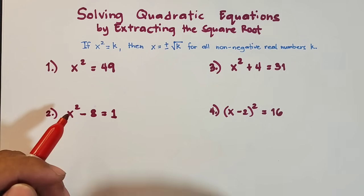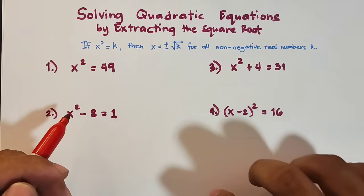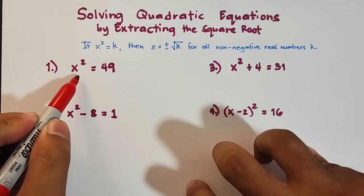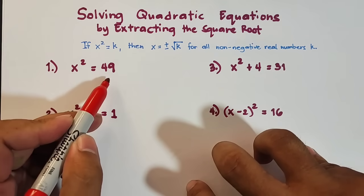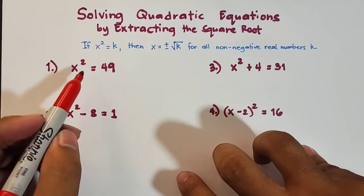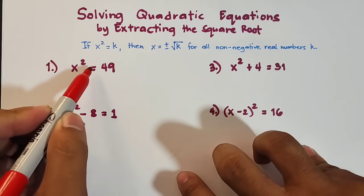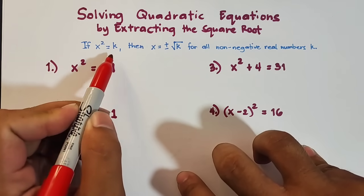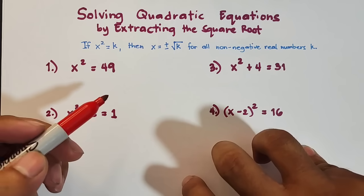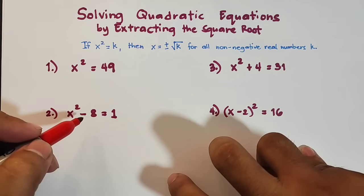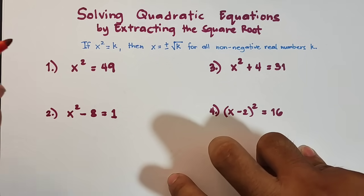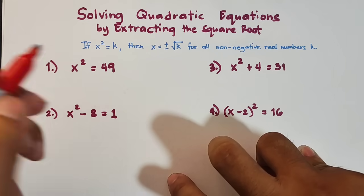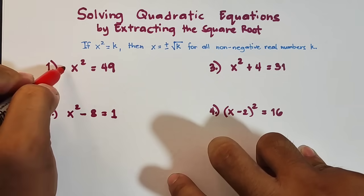For you to understand more about this property and method, let us solve different examples. In number one, we have x squared is equal to 49. As you can see, this one is already in the form x squared equals k, so basically what we need here is to extract the square root of each side of the equation.